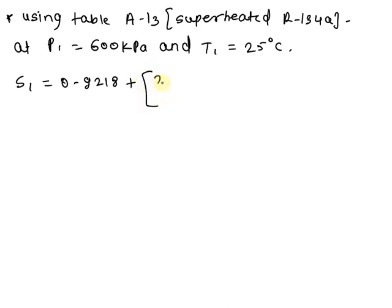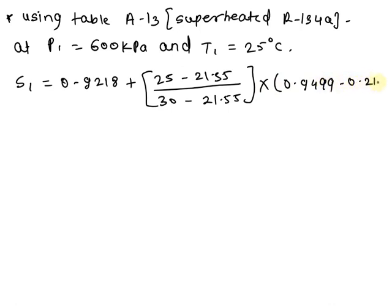in bracket 25 minus 21.55 divided by 30 minus 21.55 into 0.9499 minus 0.9218. Now after calculating we are getting the value of S1 is equal to 0.9333 kilojoule per kg kelvin.